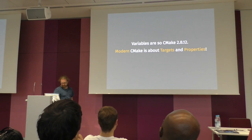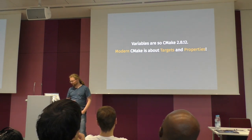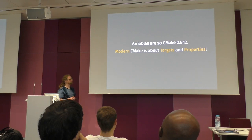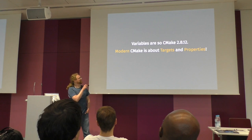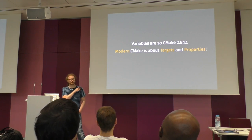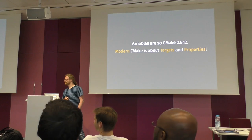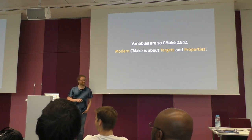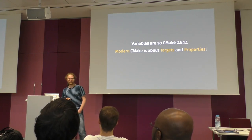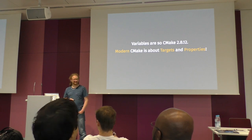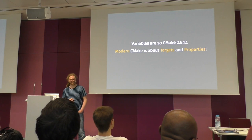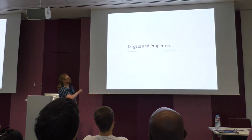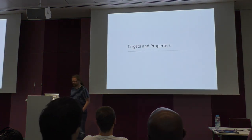But variables are so CMake 2.8.12. Modern CMake is all about targets and properties. Who uses CMake 2.8.12 or older? Not so many. Good. Everybody else uses 3 or newer? Let's talk about targets and properties.